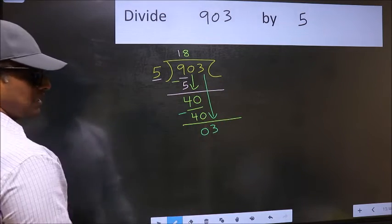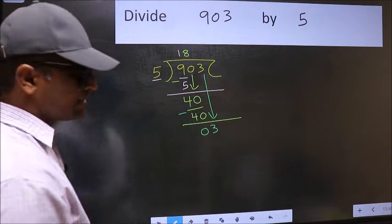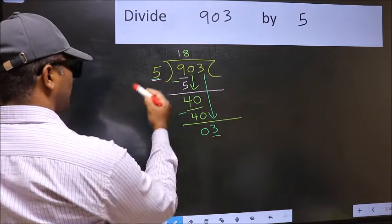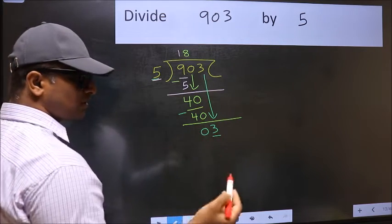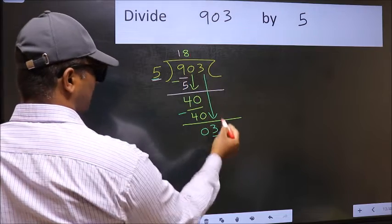After this step, the mistake happens. And the mistake is this. Here we have 3 and here 5. 3 is smaller than 5. So what many do is they directly put dot and take 0.